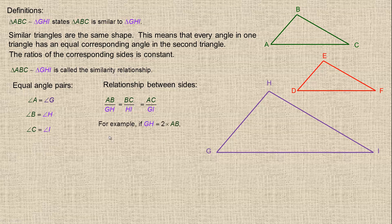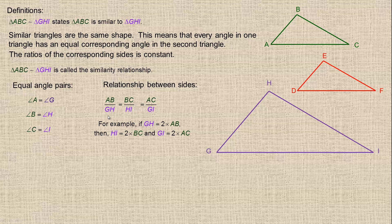For example, I tried to draw this so that the sides in GHI are double the sides in ABC. Let's say they were exactly double — so GH is exactly twice as long as AB. That would mean the HI side is twice as long as BC, and GI at the bottom is twice as long as AC. That's what I mean by the proportions between the sides: the ratio of AB to GH is the same as BC to HI, which is the same as AC to GI.